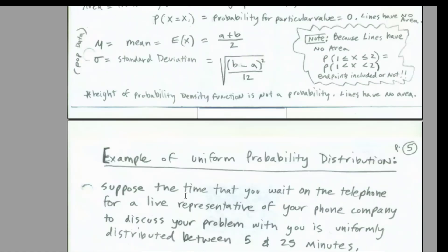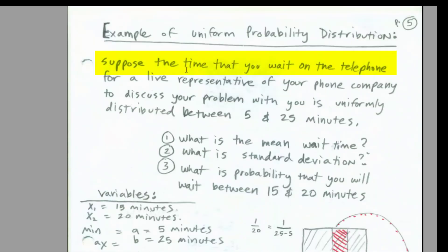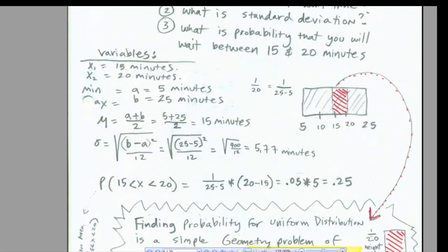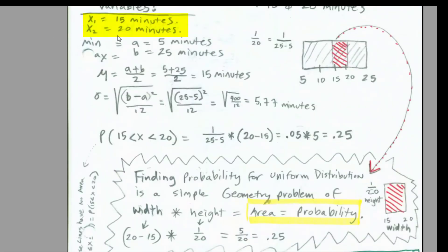Now let's look at our example on paper. And then we'll do it over in Excel. Suppose the time that you wait on the telephone for a live representative of your phone company to discuss your problem with you is uniformly distributed between 5 and 25 minutes. What is the mean wait time? And what is the standard deviation? What is the probability between 15 and 20 minutes? It's all about geometry. So we set up our variables. Our particular x and our particular two x's are 15 to 20 minutes. Our min and our max are 5 and 25 minutes. It always is helpful to draw a picture. And actually, in this chapter, we'll see how to draw pictures for all three of our distributions.